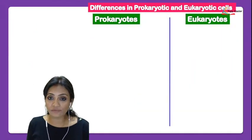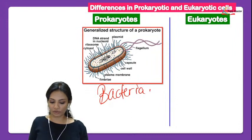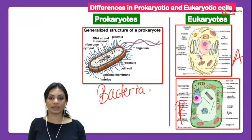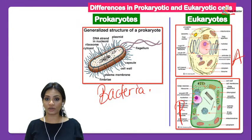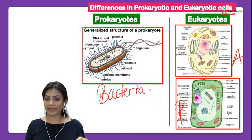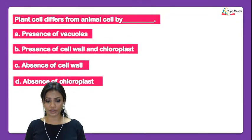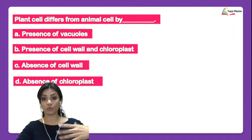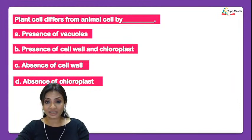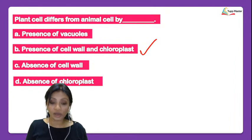When we talk about a prokaryotic cell we are talking about bacteria, and when we talk about eukaryotic cells we mention animal and plant cells. Now let's discuss some MCQs. The first: plant cell differs from animal cell by — presence of vacuoles, presence of cell wall and chloroplast, absence of cell wall, or absence of chloroplast. The answer is the second option: presence of cell wall and chloroplast. These are structures that the plant cell has but the animal cell does not.